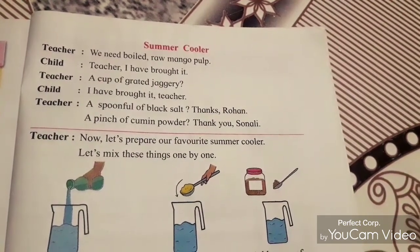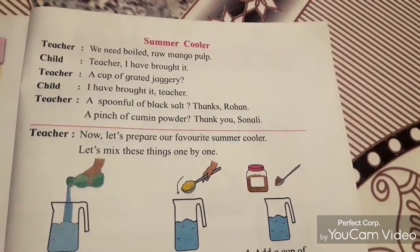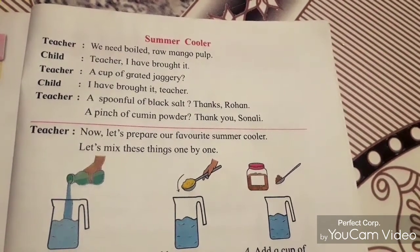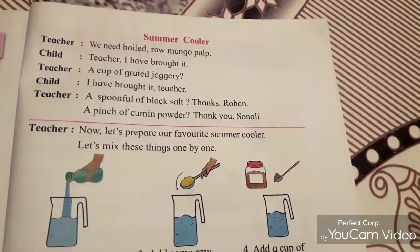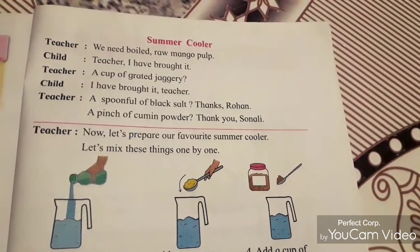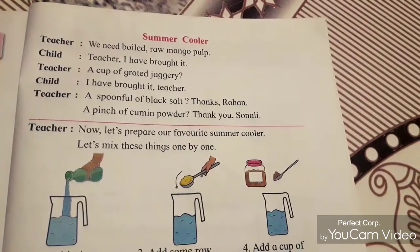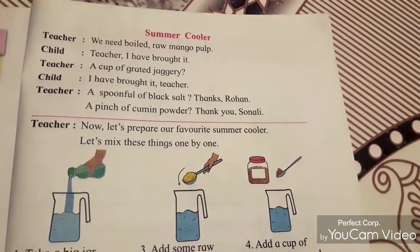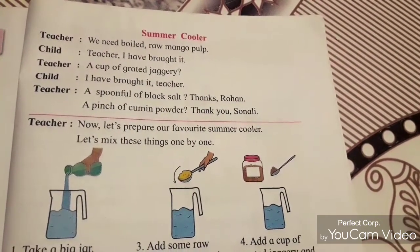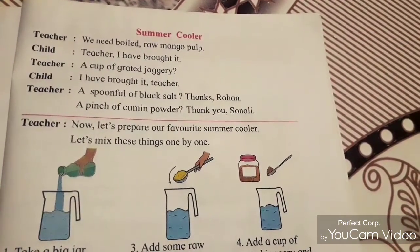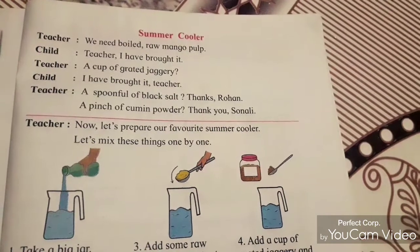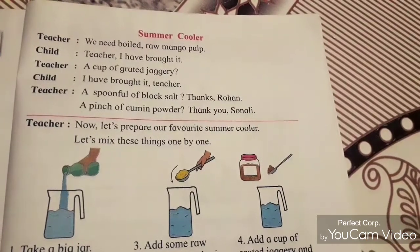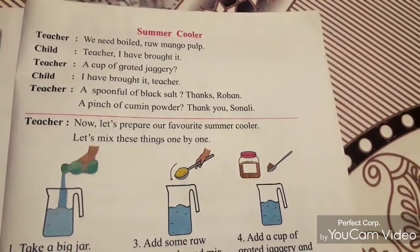Teacher said: now let us prepare our favourite summer cooler. Mix these things one by one. Teacher nai kaha, now finally we are going to make a summer cooler. Raw mango juice is a summer cooler. They are going to mix all the things one by one. Ek ek karke woh saari cheezon ko mix karne waale hain. With the help of the next video, I am going to explain the steps one by one to make the summer cooler, means to make raw mango juice.